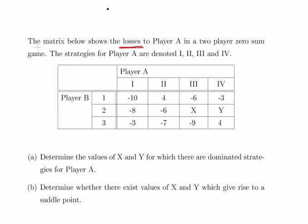Just to sort of start off, let's have a look at strategies 1 and 2. So essentially things are better for Player A the smaller or more negative the number is. So minus 10 is less than 4, minus 8 is less than minus 6, but unfortunately minus 3 is not less than minus 7.